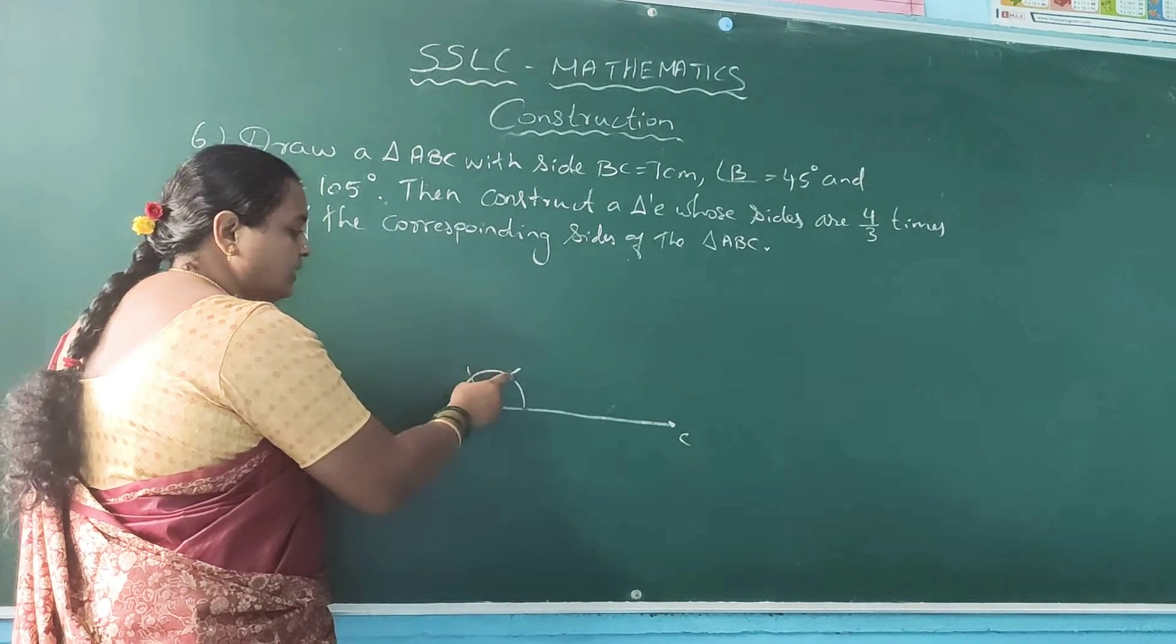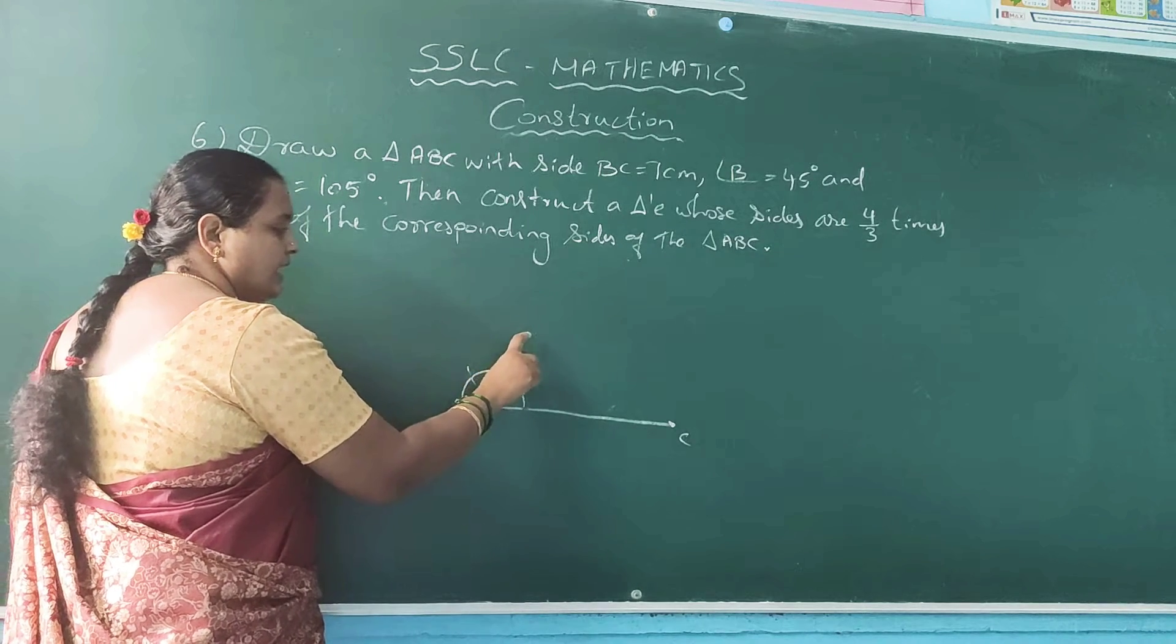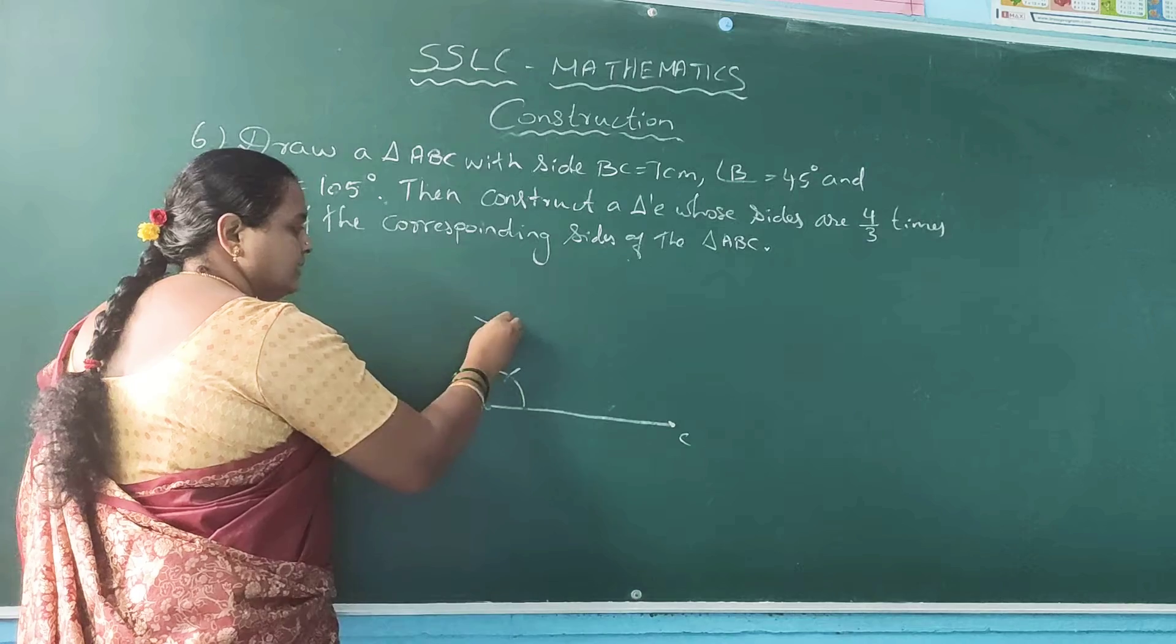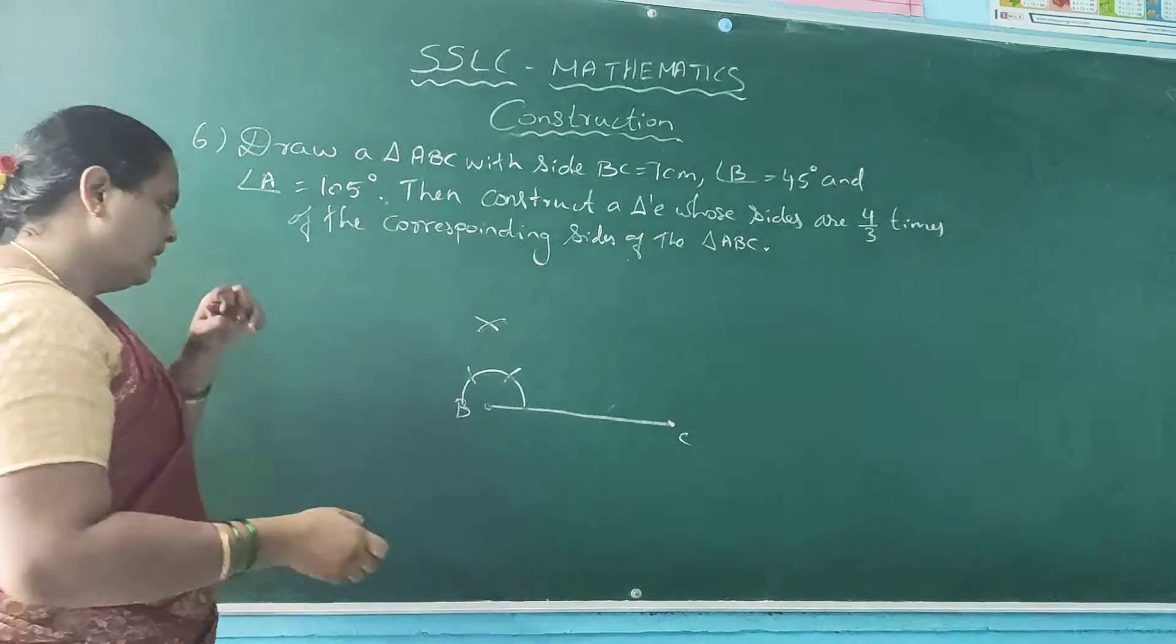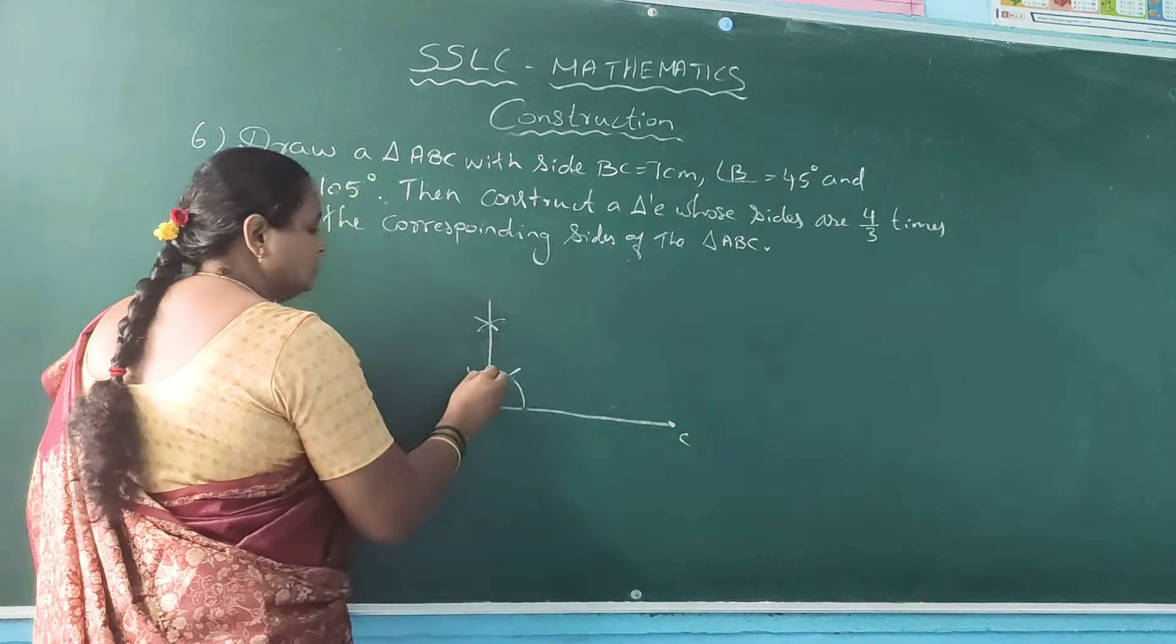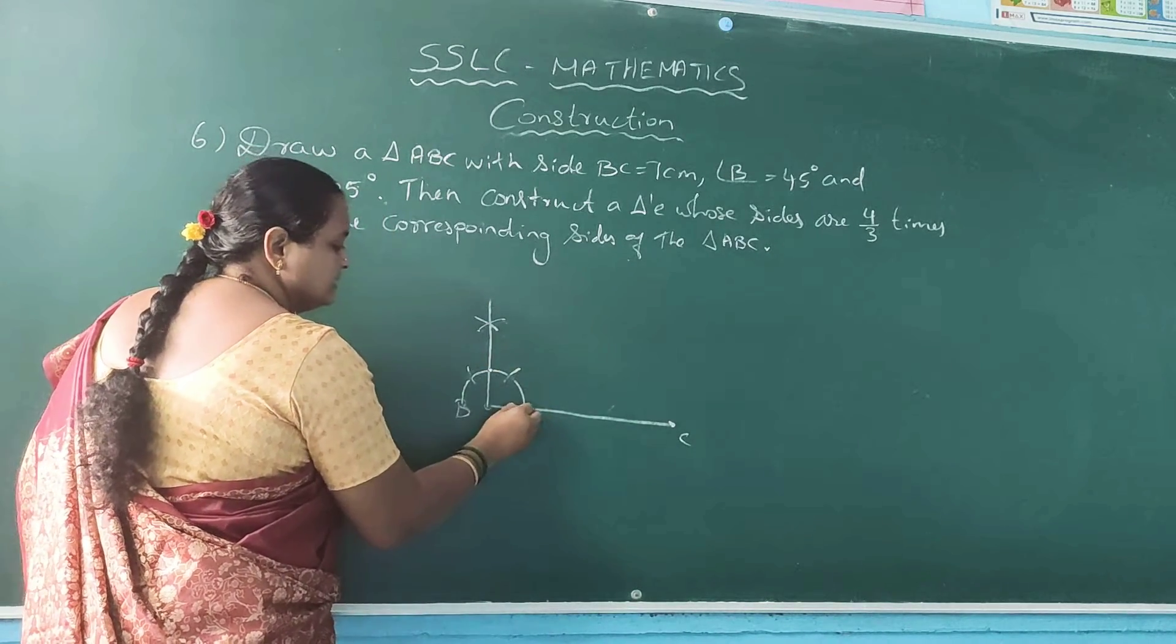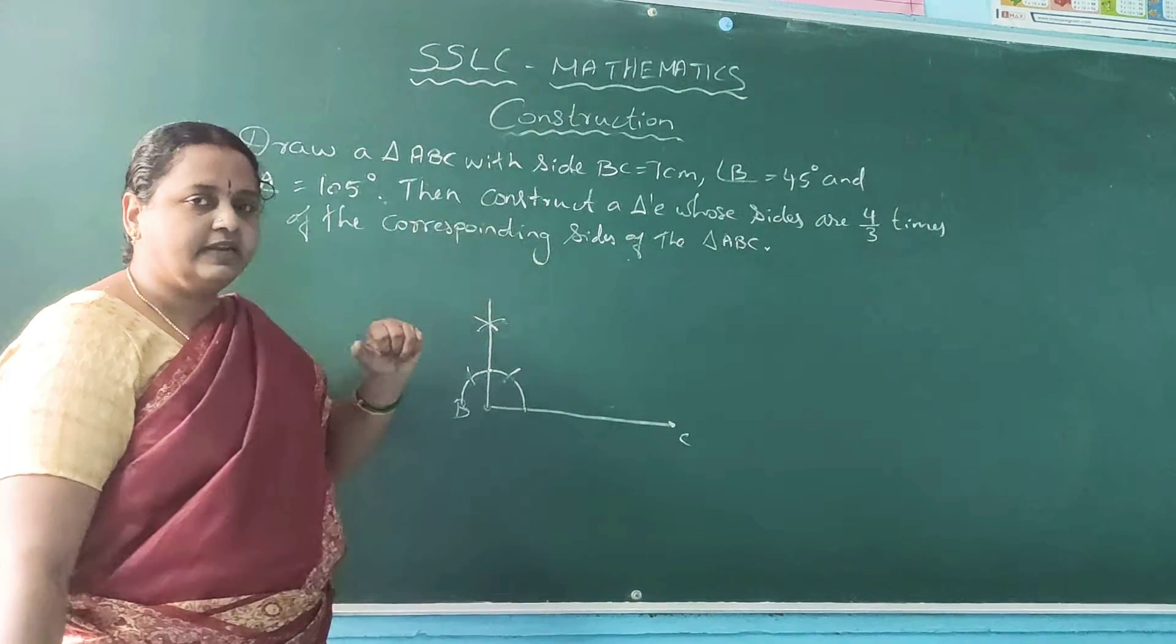Now bisect 120 and 60. How to bisect? Keep your compass needle here, mark it up, then cut down. Same measurement, you should not adjust that measurement. Now draw a cut. Now draw a straight line passing through this. So now this is 90 degree.